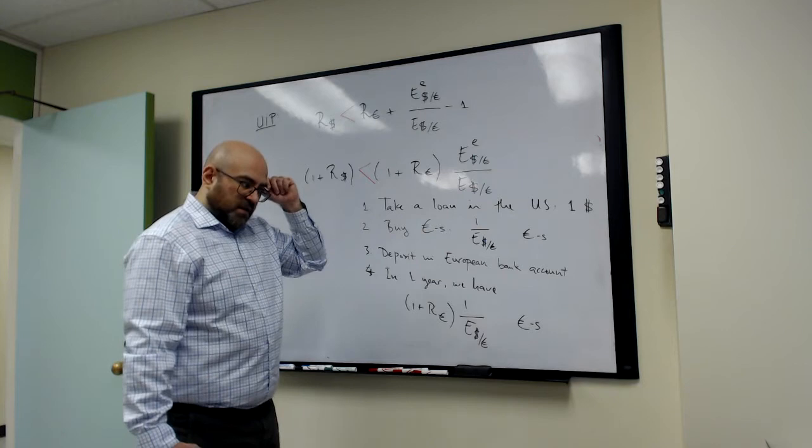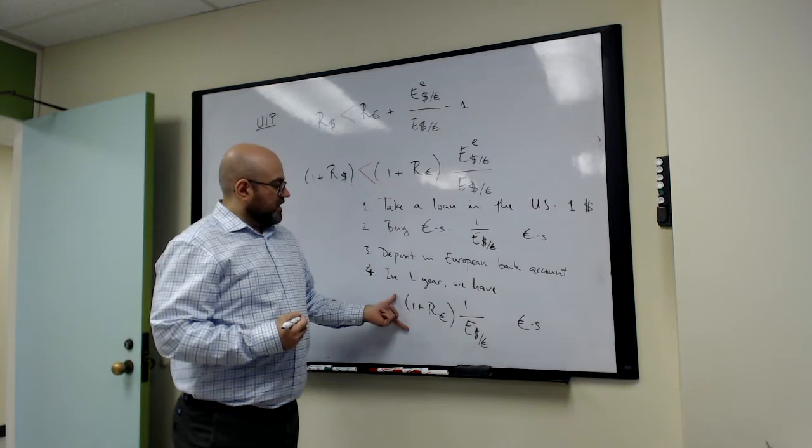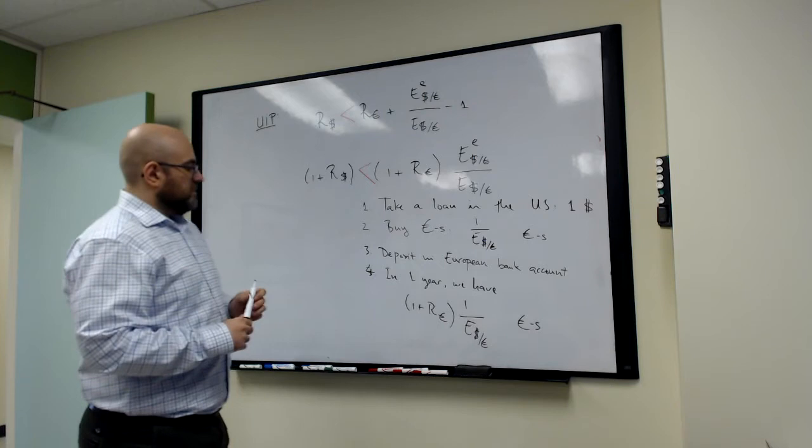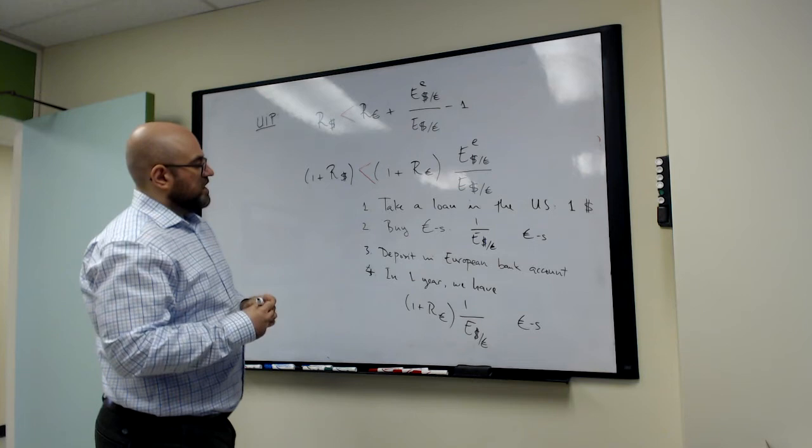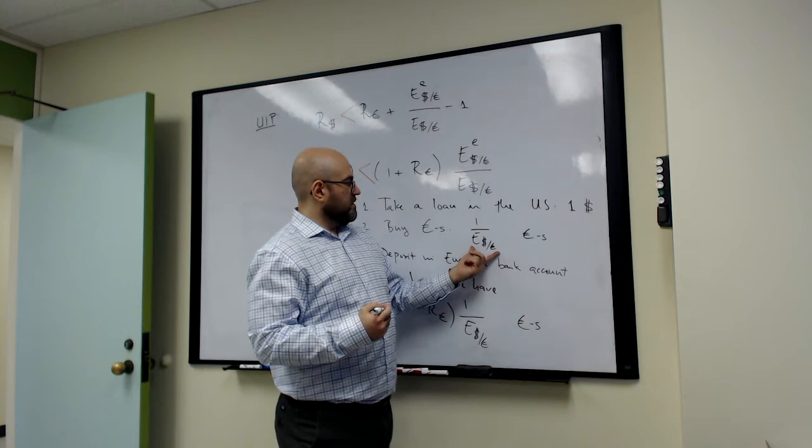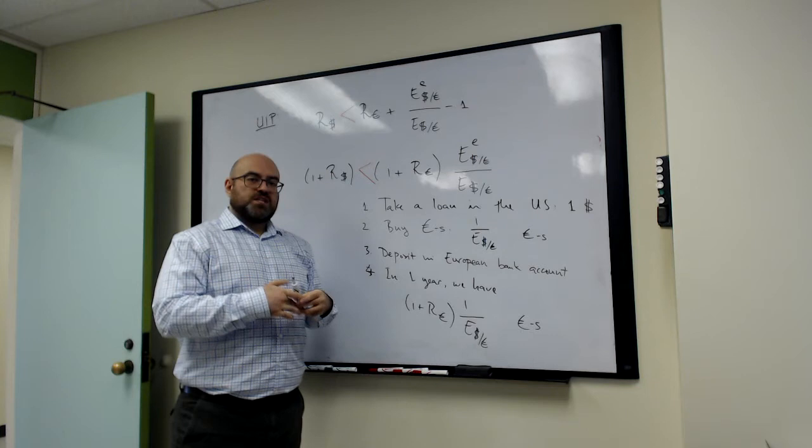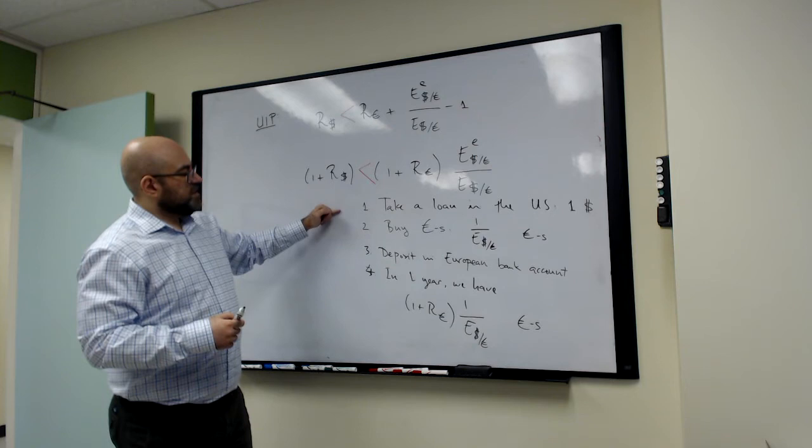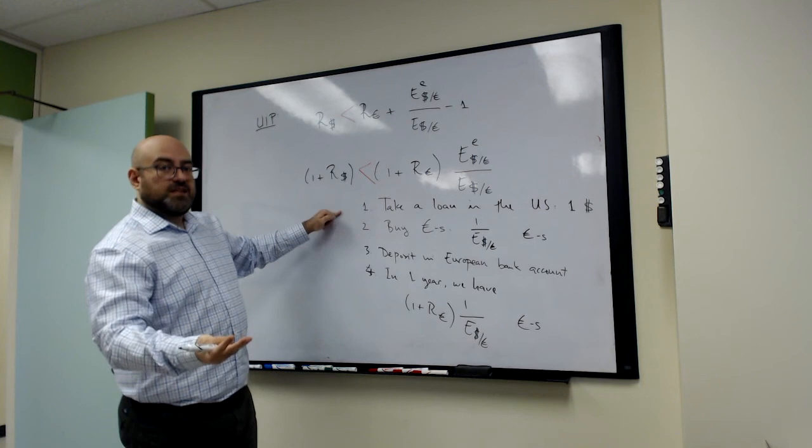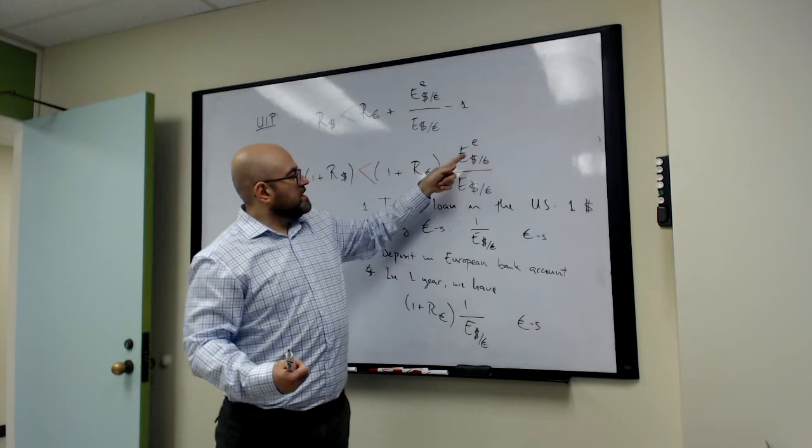Next, we will exchange these euros into dollars so we can bring back this return. In one year's time, the exchange rate will be different from what it was today. The exchange rate today is just E dollars per euro. This is the current exchange rate, the one that prevails in the spot market today. There is uncertainty about the level of the exchange rate in one year's time. So when we think about this arbitrage strategy, we're going to think about our beliefs or our expectations about future exchange rates. So this E superscript E is our expectations about the nominal exchange rate in one year's time.